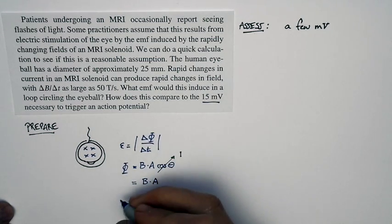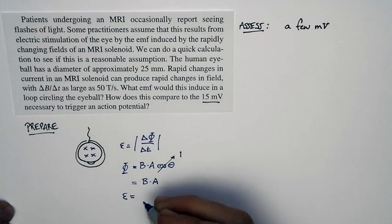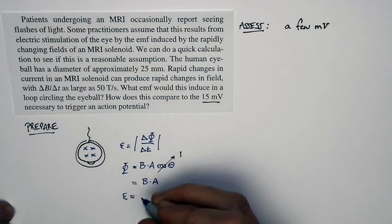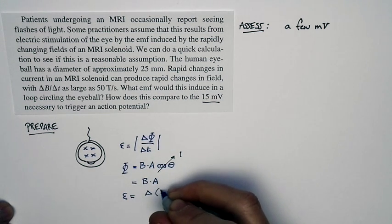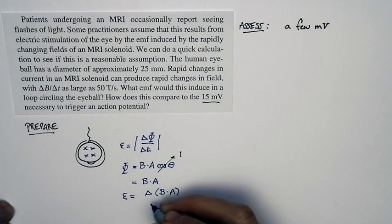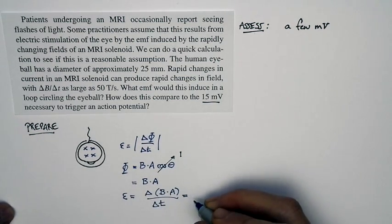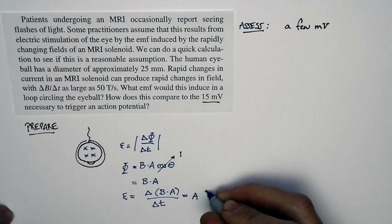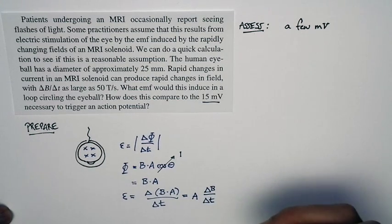And let's not worry about the magnitude symbols. We'll just make everything positive. So my expression reduces to this. The change in flux is just, or the EMF is just equal to the change in flux. So it's just the change in B times A divided by delta T. Well, A is the area of the eyeball. That doesn't change. And so it just turns into this. The EMF is just equal to the area times the change in magnetic field divided by the time.